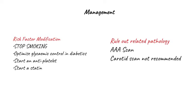All patients should be on an anti-platelet and a statin. The other aspect is to rule out related pathology. We mentioned in a previous video that cigarette smokers are prone to abdominal aortic aneurysms, so it's important that patients presenting with claudication have a triple-A scan. Carotid scans, on the other hand, are currently not recommended in the absence of a previous history of neurological deficits.